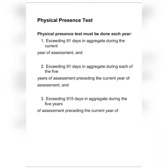Requirement number two: the person must exceed 91 days in aggregate during each of the five years of assessment preceding the current year. In other words, if we are in 2022, the person must have stayed in South Africa for more than 91 days — that is 92 or more — in each of the years 2021, 2020, 2019, 2018, and 2017.